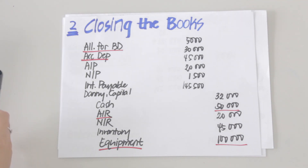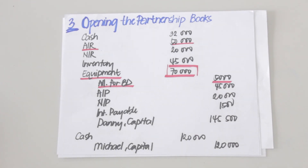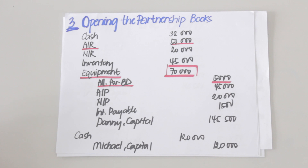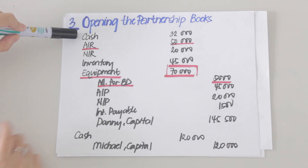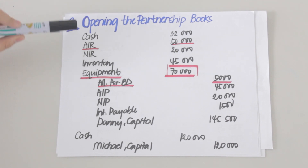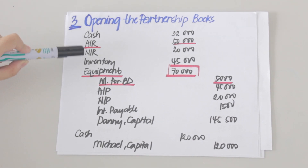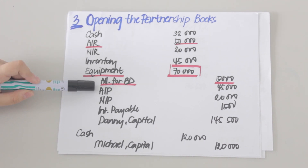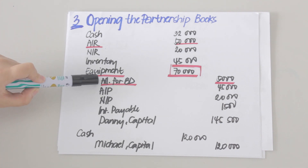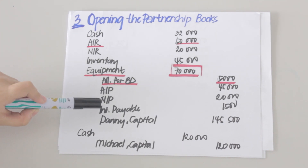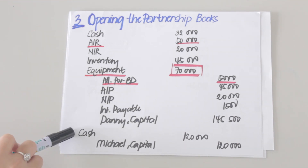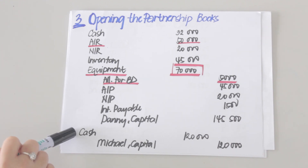After closing the books, we record the opening entries for the partnership books. We debit all the assets the sole proprietor will invest and credit the liabilities the partnership will assume. Debit: cash, accounts receivable, notes receivable, inventory, and equipment. Credit: allowance for bad debts, accounts payable, notes payable, interest payable, and Danny capital. For the new partner Michael, simply debit cash for 120,000 pesos and credit Michael capital for 120,000 pesos.